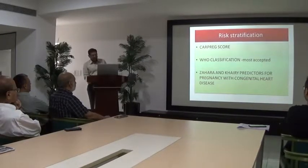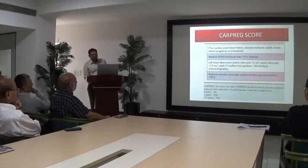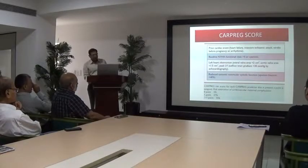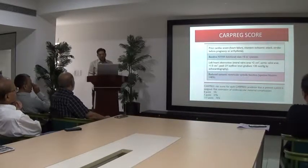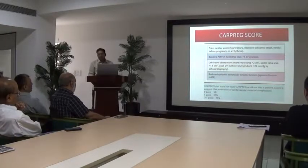There are various risk scores available. The CARPREG cardiac score assigns one point each for: a previous history of cardiac event such as heart failure, TIA, or stroke; NYHA class more than 2 or cyanosis; left heart obstruction due to mitral stenosis, aortic stenosis, or HOCM; and reduced systemic ventricular function with EF less than 40%. With zero points there is a 5% risk, 1 point equals 27%, and more than 1 equals 75% risk of maternal complications.